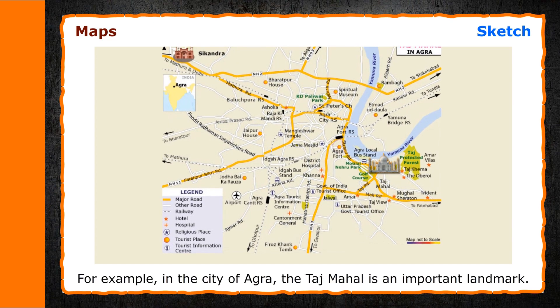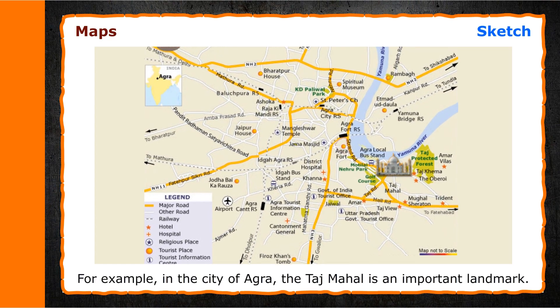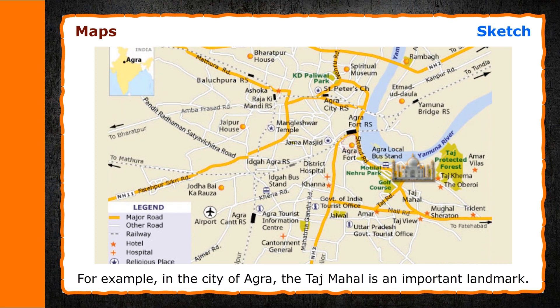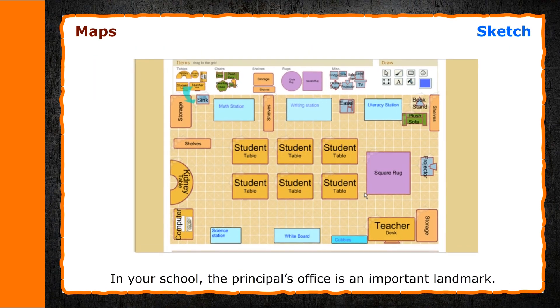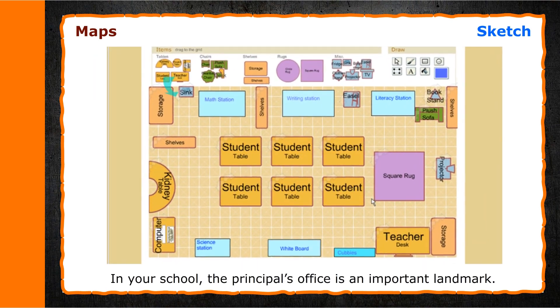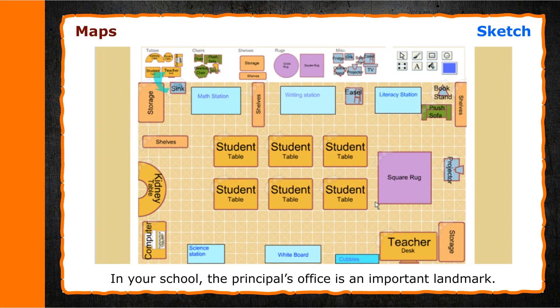Landmarks can be clearly seen from a distance and help us to reach our destination easily. For example, in the city of Agra, the Taj Mahal is an important landmark. In your school, the principal's office is an important landmark.